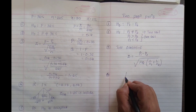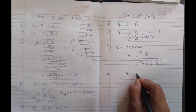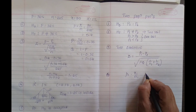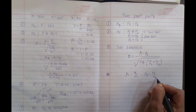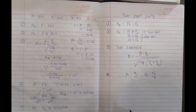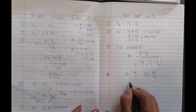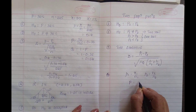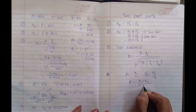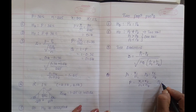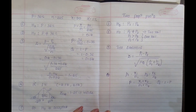Now, P1-hat equals X1 divided by N1, and P2-hat equals X2 divided by N2. Capital P equals X1 plus X2 divided by N1 plus N2. And Q equals 1 minus P.